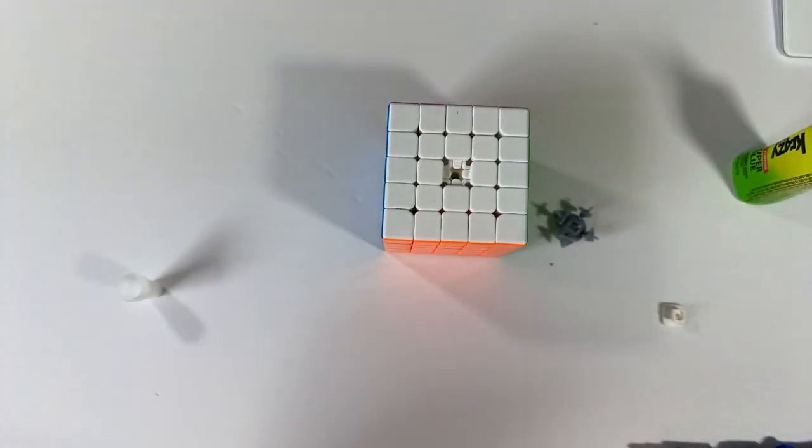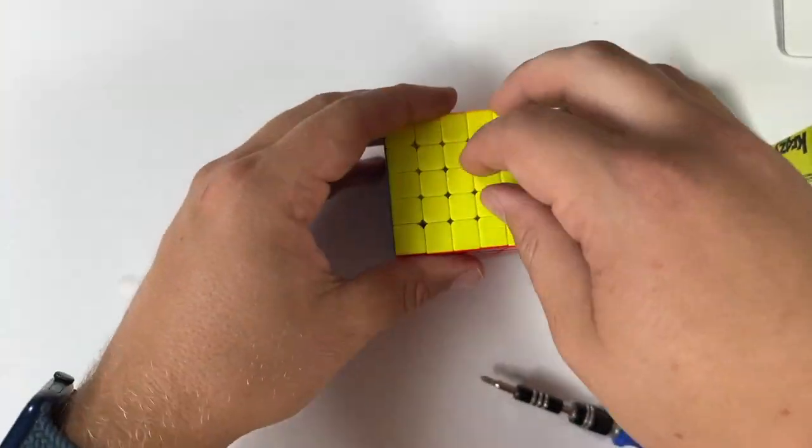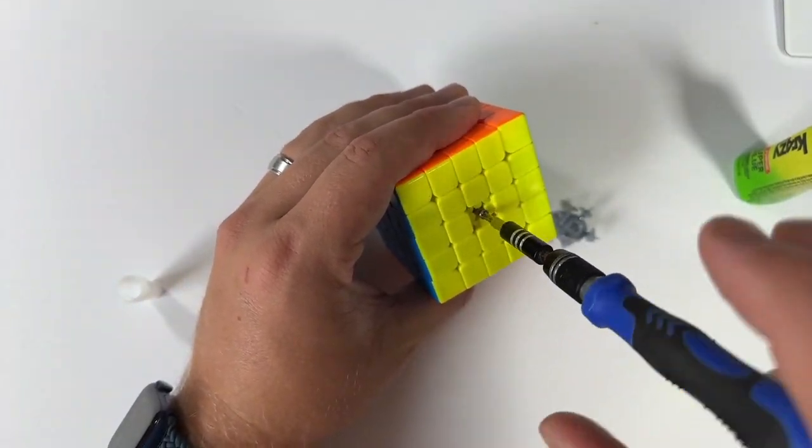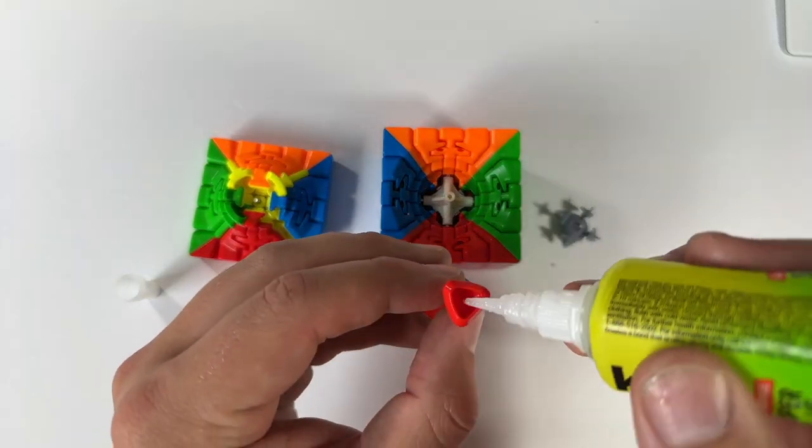Once the glue has cured, reassemble the top half of the cube. Disassemble the opposite side of the cube and repeat the gluing process for the four corner pieces.